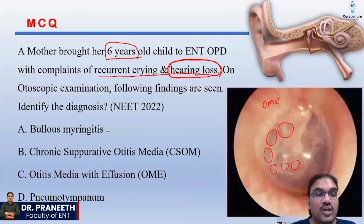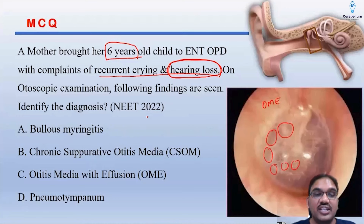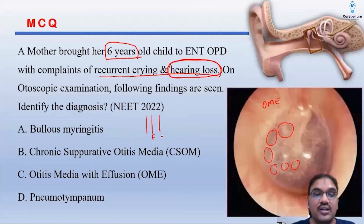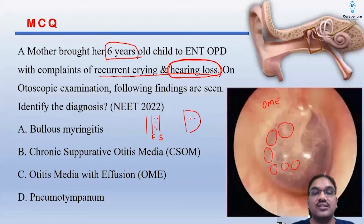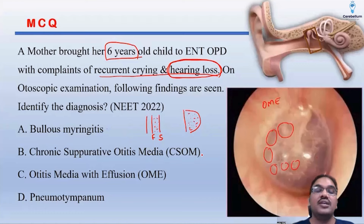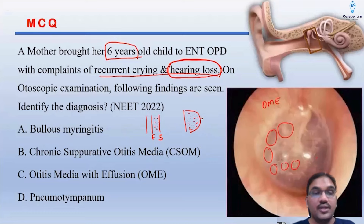What is bullous myringitis? Bullous myringitis means in the tympanic membrane, there are three layers — between the middle fibrous layer and outer squamous layer there will be accumulation of fluid, and you will see the tympanic membrane will be bulged like this due to that fluid accumulation between these two layers. You don't see any air-fluid levels. So that is bullous myringitis — that is not the option here.